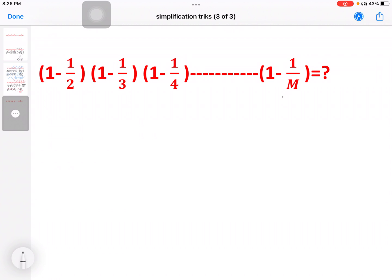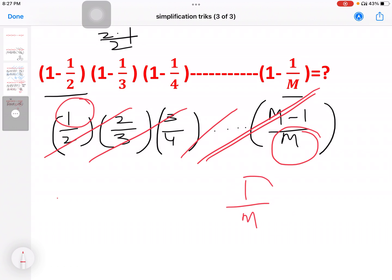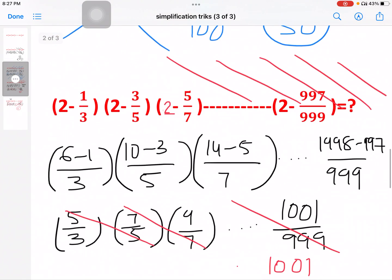Next model. Here we have M. We have the same answer. Here it is very easy. 1 minus 1 by 2, 1 minus 1 by 3, 1 minus 1 by 4 and so on, 1 minus 1 by M. So very easy. So here we have 1 by 2, 2 by 3, 3 by 4 and so on, M minus 1 by M. So let's see what the pattern here is. The pattern is 1 by M.